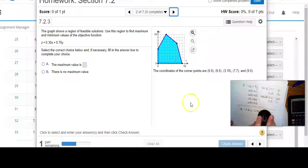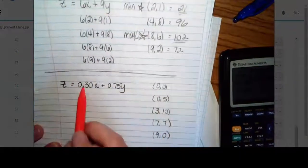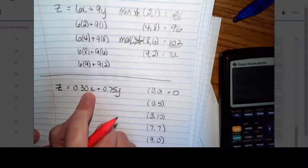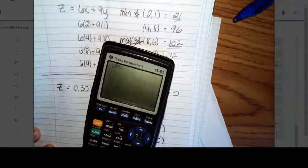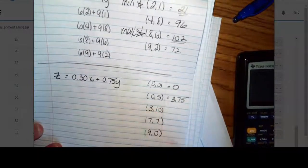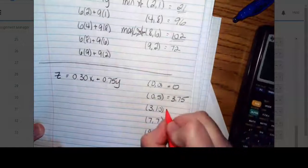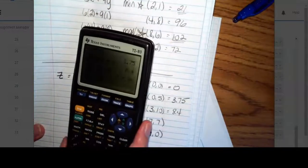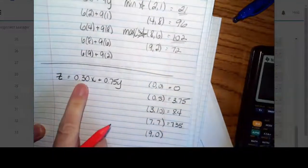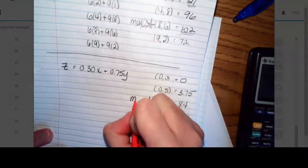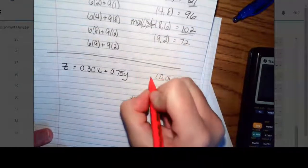So let's start with this because 0 is the easiest. If I sub in 0s, I'm going to get 0 plus 0, which is 0. If I sub in 0,5, 0.75 times 5 is going to be 3.75. Sub in a 3,10, so I'll get 0.3 times 3 plus 0.75 times 10, which gives me 8.4. Evaluate at 7,7, 0.75 times 7, and I get 7.35. And then 9,0 is going to give me 2.7. So which one is the biggest? This one is the biggest, so he's my maximum. Which one is the smallest? He's my smallest, so he's my minimum.